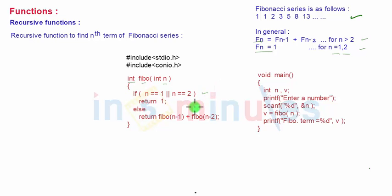The first statement is a fixed statement that is if n is 1 or n is 2 returns 1. Otherwise, it returns the answer of Fibo of n minus 1 plus Fibo of n minus 2.